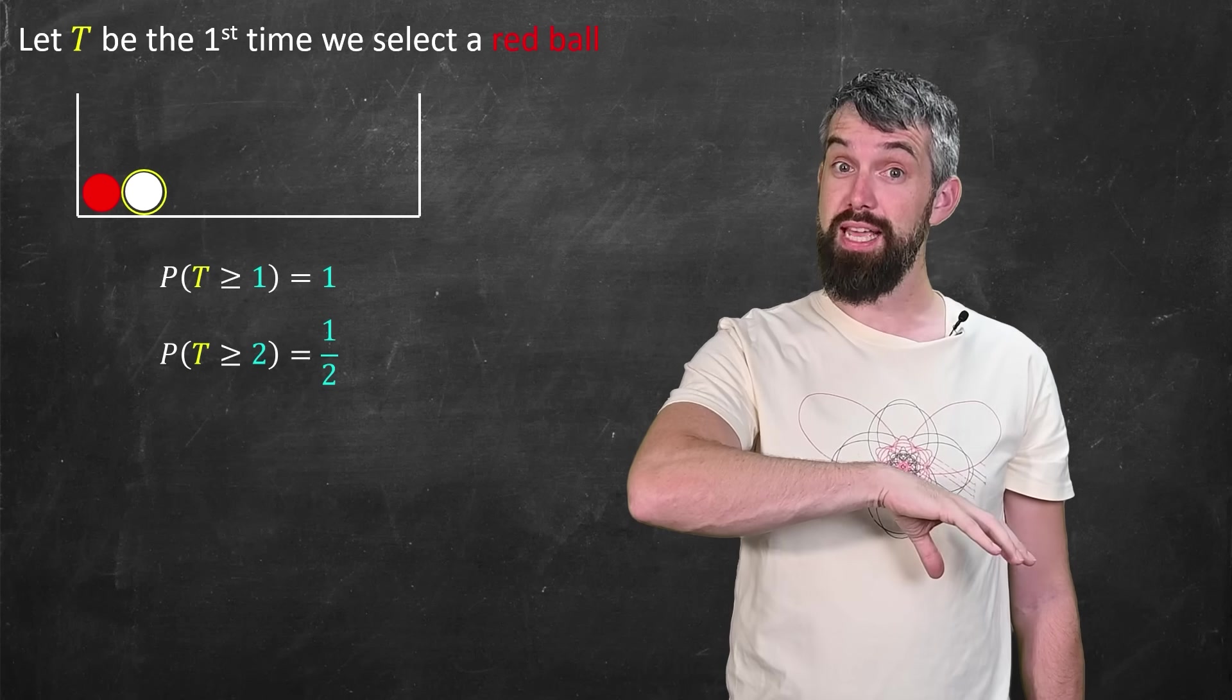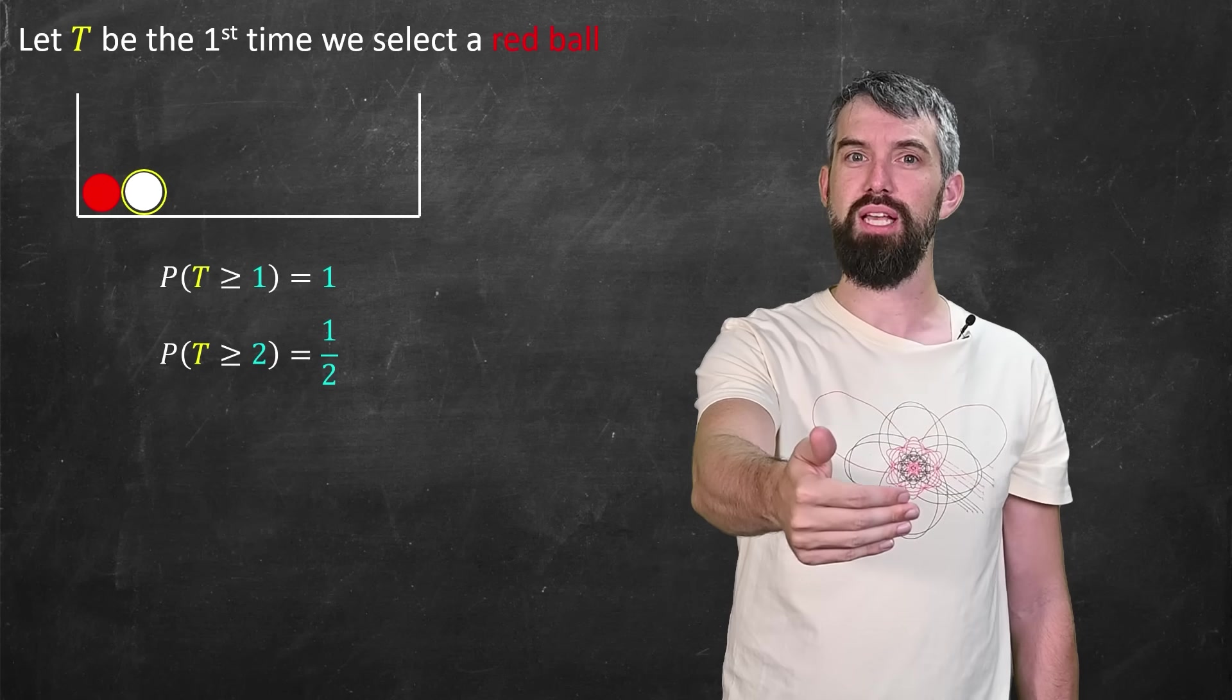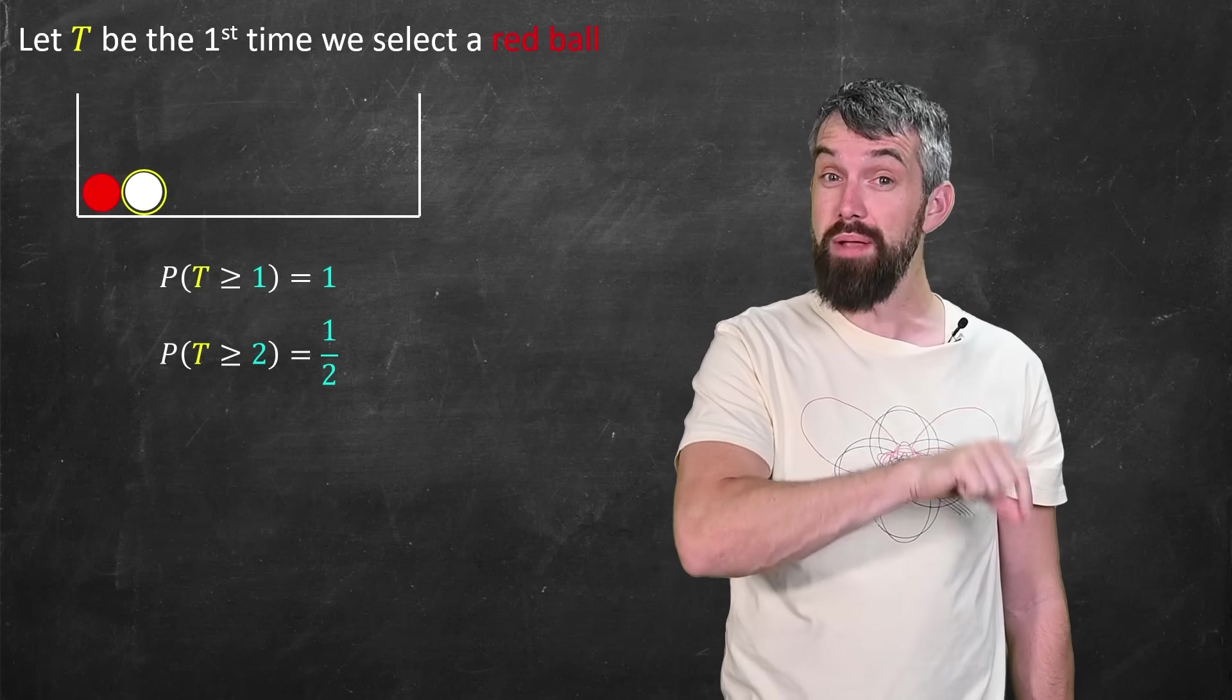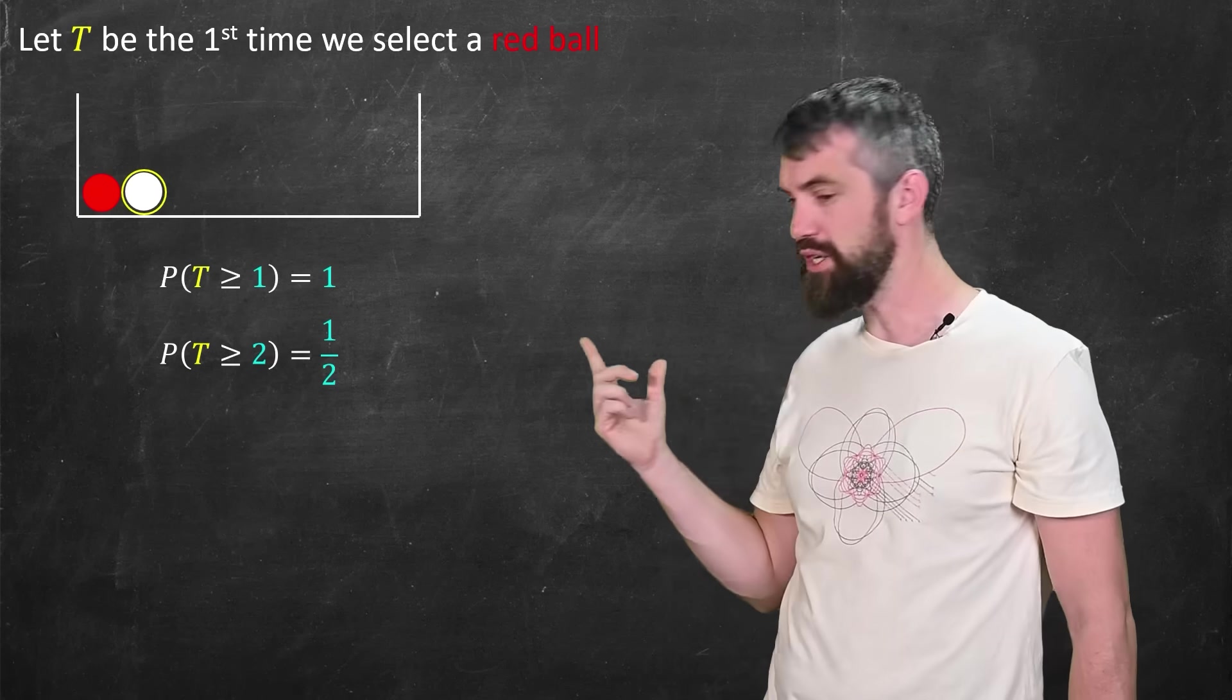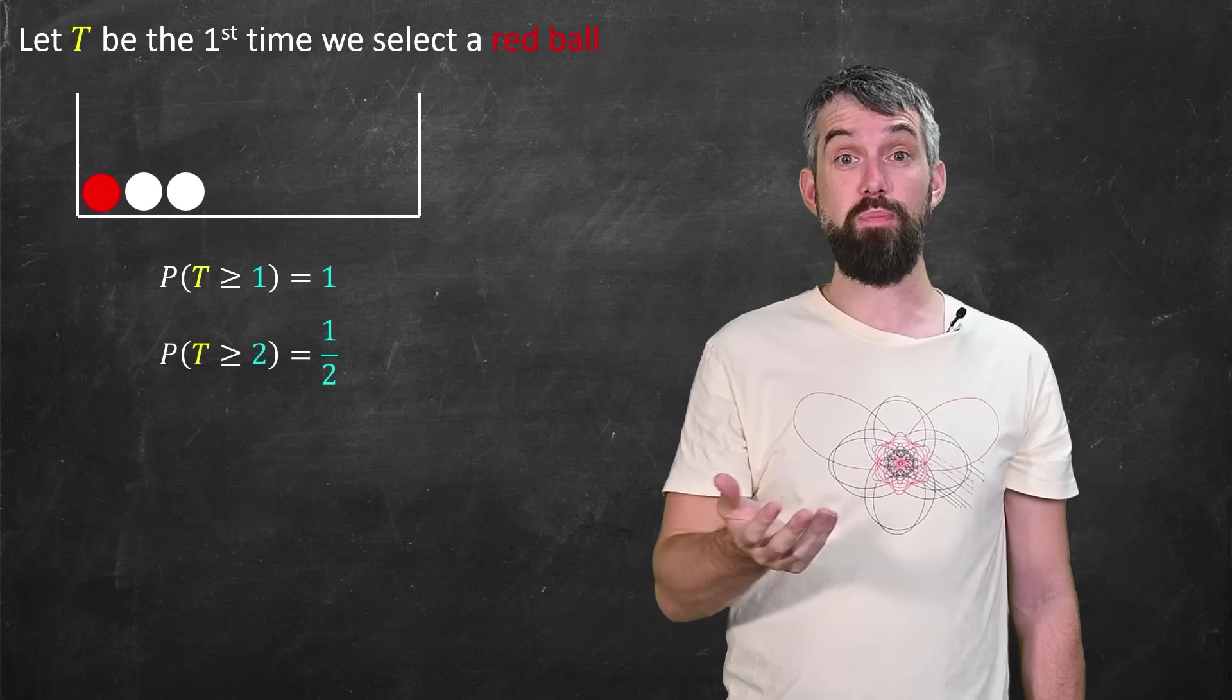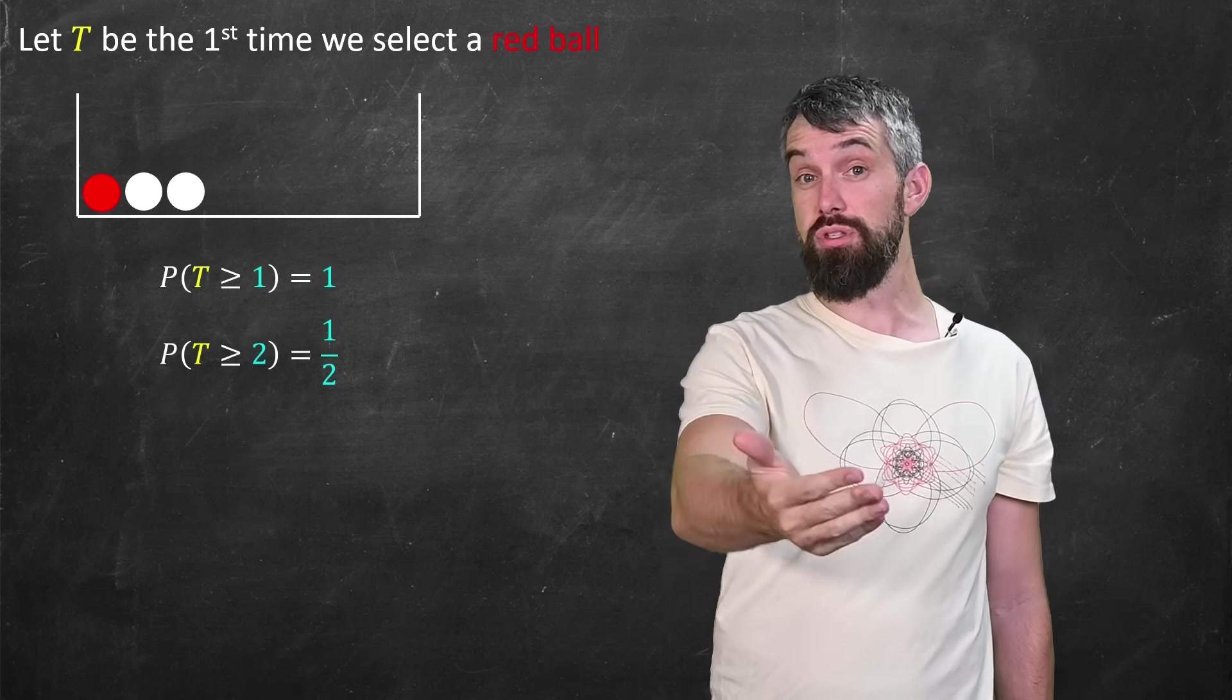But then the probability that it takes at least two steps, if it takes at least two steps, you must have selected a white ball on the first round. One white, one red, 50% probability. The probability of taking at least two steps is one half.